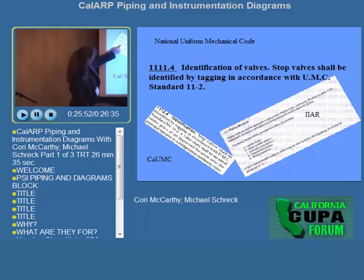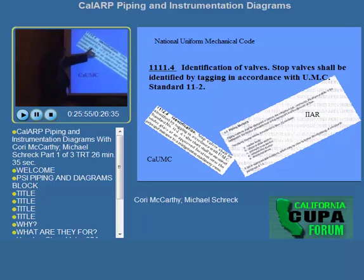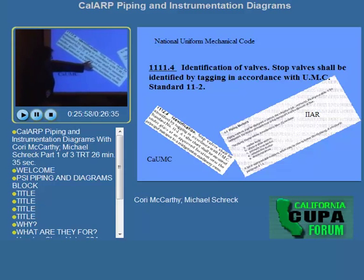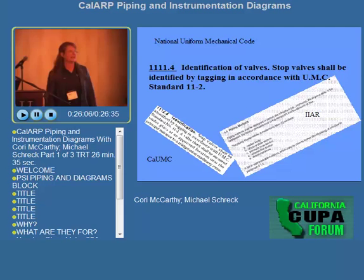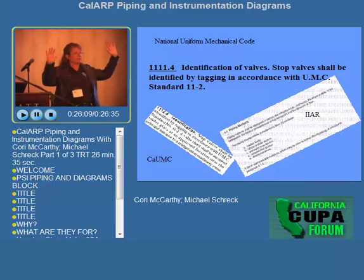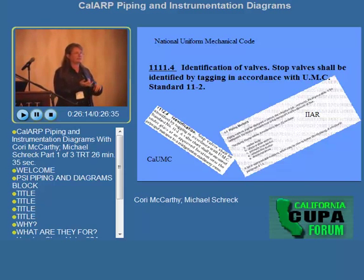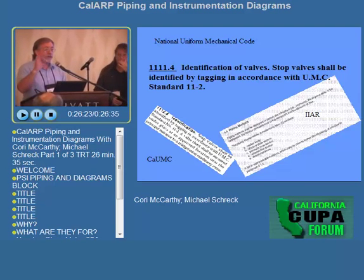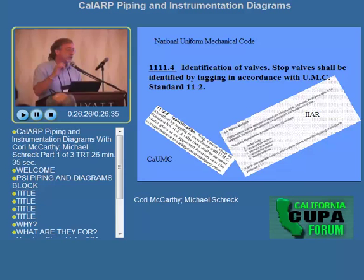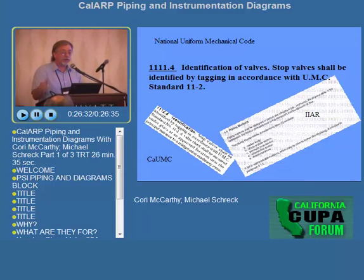The California UMC Standard Number 12 states that a valve chart shall be mounted under glass at an approved location near the principal entrance to a refrigeration machinery room. That means a large P&ID mounted on the wall to support training, support the fire department, and support the plant in making decisions. If the valve tags only have a number, you also have to have a valve list under glass that says what that valve is for, what it does, and what its normal state is so the operator can make correct decisions.